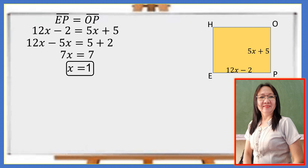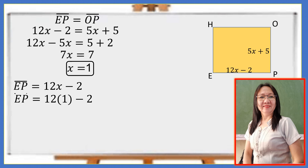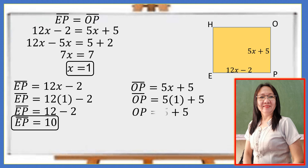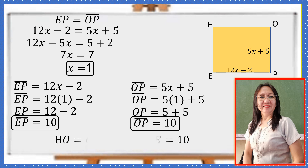Using X equals 1 to find EP: EP equals 12X minus 2, so 12 times 1 is 12, minus 2 is 10. EP equals 10. For OP, which is 5X plus 5, substituting 1 for X gives 5 plus 5 equals 10. So OP equals 10. Therefore, all sides HO, OP, EP, and HE are congruent and each equals 10 units.